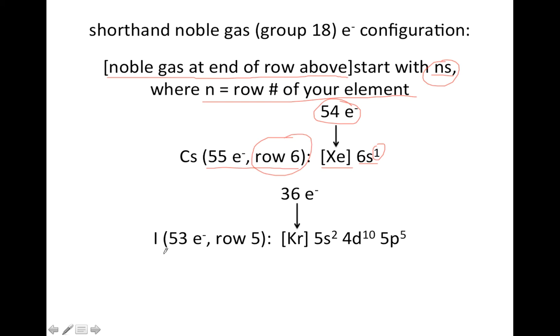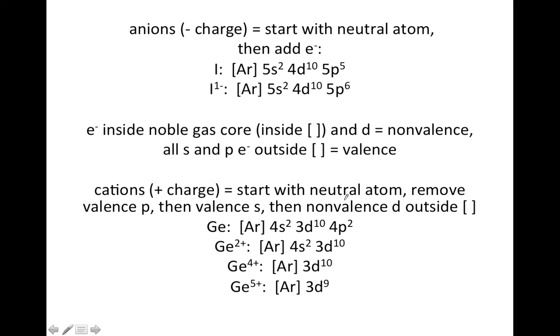For iodine, 53 electrons, row 5, so I go up to row 4, all the way to the right, and I write down Kr in brackets. It's the noble gas in the previous row. That'll get me 36 electrons, and I need 17 more. So since I is in the fifth row, I start with 5s, and I go from there until I have 17 electrons. Up to the 4d, if that's filled, that's 12, and I have 5 more to go, so I put them in the 5p.